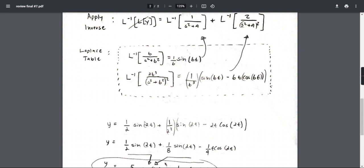Now over here, it's going to be 1 over b to the third. So it's going to be equal to that. It's going to be sine 2t. This is a b, not a 6, sorry about that. It's going to be equal to that.